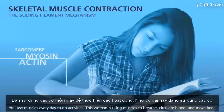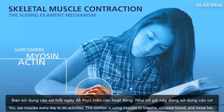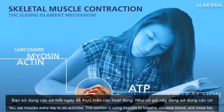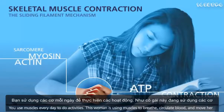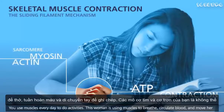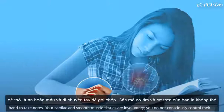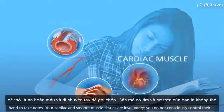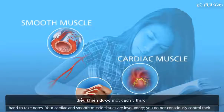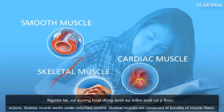You use muscles every day to do activities. This woman is using muscles to breathe, circulate blood, and move her hand to take notes. Your cardiac and smooth muscle tissues are involuntary — you do not consciously control their actions. Skeletal muscle, however, works under voluntary control.